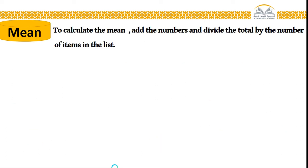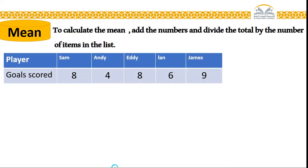Now, third one, the mean. To calculate the mean, add the numbers and divide the total by the number of items in the list. Like that. I will repeat, upload again with my chart.